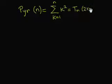And then we can place that value in the other relation to get pyramidal n equal T-sub-n times two n plus one over three.